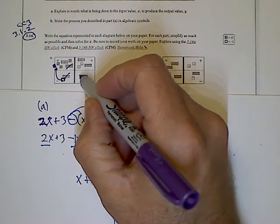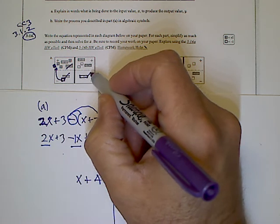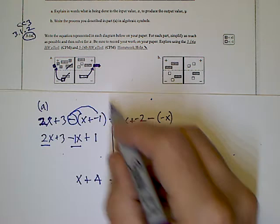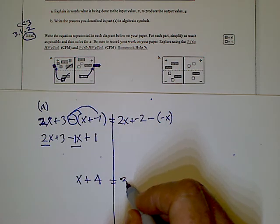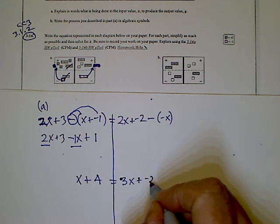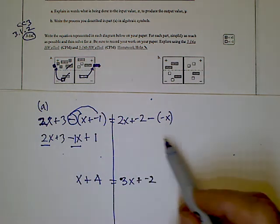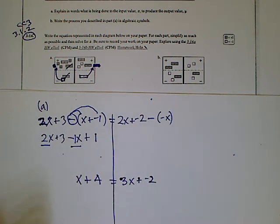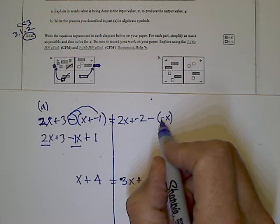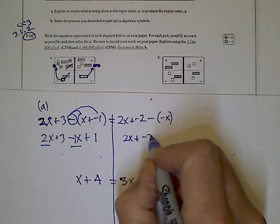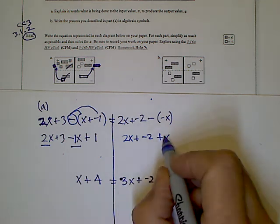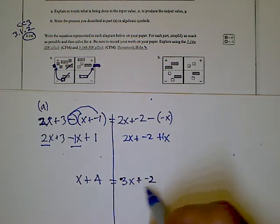For the right side with the tiles, I take the negative x from the bottom and bring it up to make it a positive x on top, so the right side becomes 3x plus negative two. Algebraically: minus a negative x becomes plus x, so we have 2x plus negative two plus x, which combines to 3x plus negative two — same result.